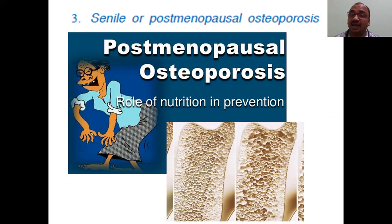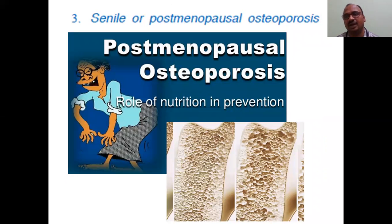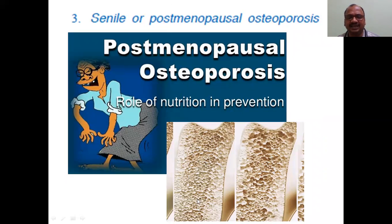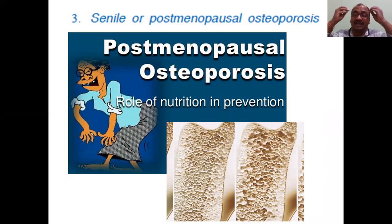The third use is for senile osteoporosis — very important bit. Senile osteoporosis is also called post-menopausal osteoporosis, occurring from around age 50. Periods will stop — that is called menopause. After menopause the body bends because of post-menopausal osteoporosis — the bones develop many pores. This is the severe condition of osteoporosis — a very horrible situation. That is why you must take vitamin D and calcium sufficiently.